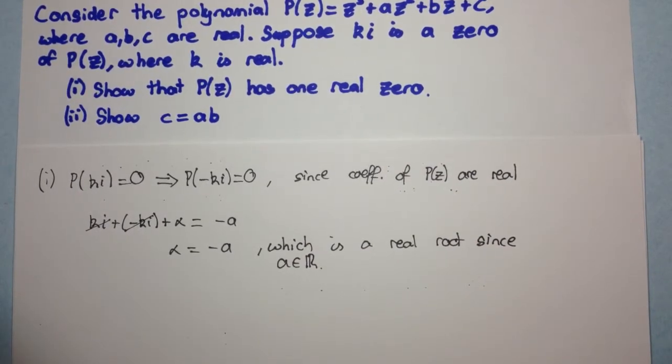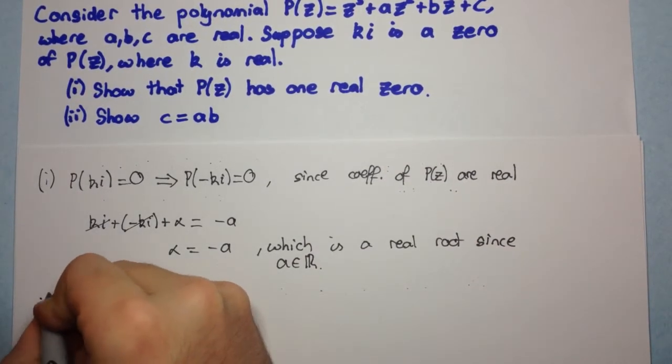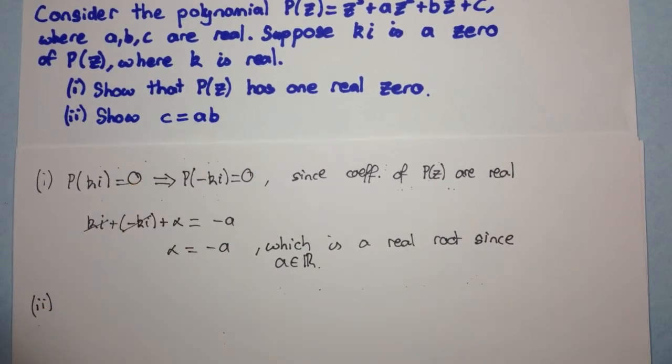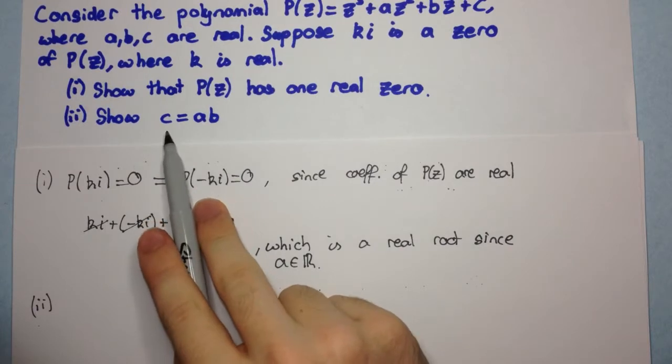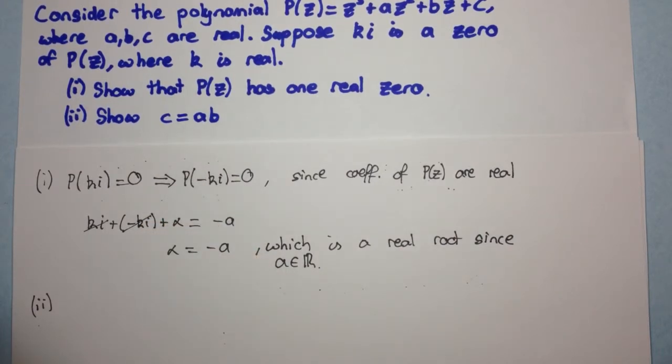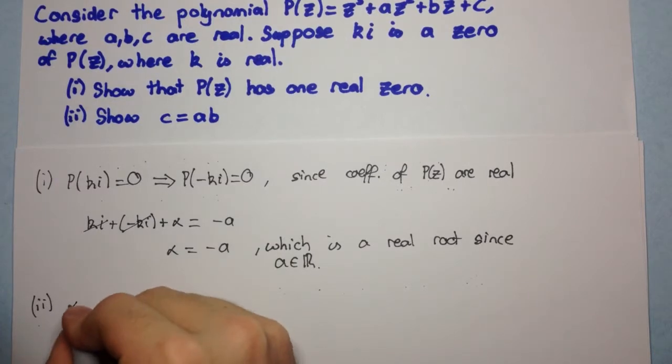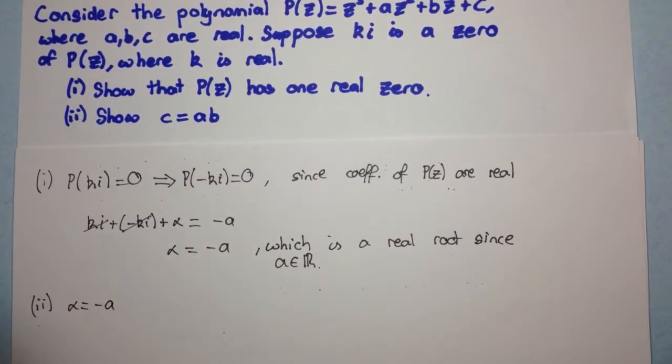All right, now the second part says, show that C equals AB. Okay, so when you need to show a relationship between the coefficients, you should be thinking straight away. I need to find values for the sum of roots one at a time, the sum of roots two at a time, and the product of roots. So, we already have the sum of roots one at a time. We got Alpha is equal to minus A. Okay, I'll just underline that.